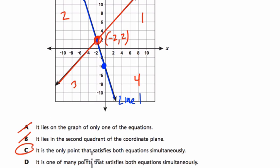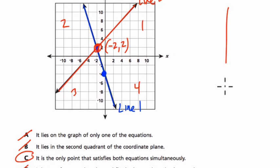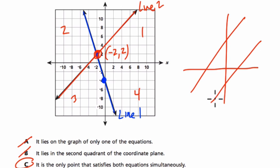It is one of many points that satisfies both equations simultaneously. Well, that would only happen if the lines crossed again. But lines either cross once or they're parallel and they never cross. This is parallel lines,